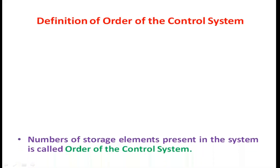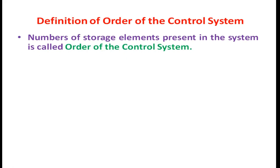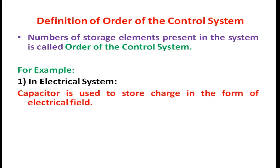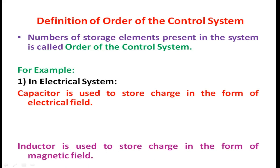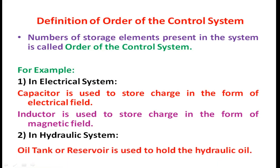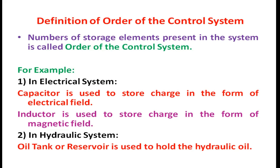The order of the control system is defined based on the number of storage elements present in the system. For example, in an electrical system, capacitors and inductors are storage elements — capacitors store charge in the form of an electric field, and inductors store charge in the form of a magnetic field. In a hydraulic system, an oil tank that holds hydraulic oil is considered a storage element.